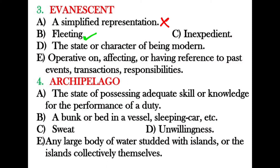The next word is 'archipelago,' meaning a group of islands or a body of water containing many islands. The correct answer is 'any large body of water studded with islands, or the islands collectively themselves.' The E option is correct.